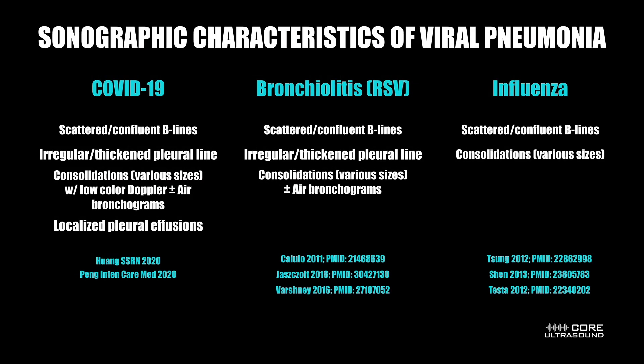Now let's talk about the actual findings of viral pneumonia. We don't have a whole lot of data out there but we have some. In influenza you'll see scattered and confluent beelines as well as consolidations of various sizes. When you look at the literature for bronchiolitis, which is usually caused by RSV, you'll see those two things plus an irregular or thickened pleural line, and you might actually see air bronchograms — that's where you have little white dots within the subpleural consolidation.